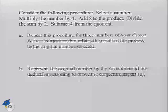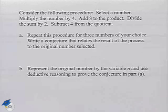Now we're going to look at a problem where we have to come up with a conjecture. Consider the following procedure: select a number, multiply the number by 4, add 8 to the product, divide the sum by 2, subtract 4 from the quotient.